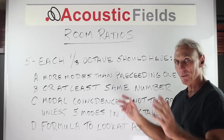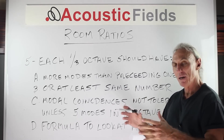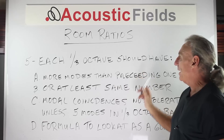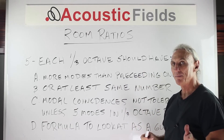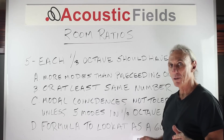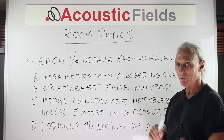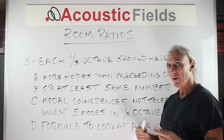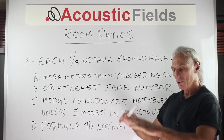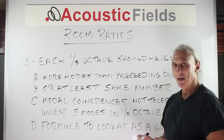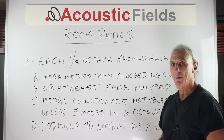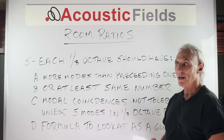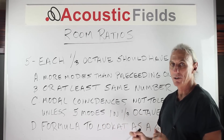What did Bonella try to do with all this information below 200 cycles that he discovered with 10 Hz mode spacing? He discovered that each one-third octave band should have more modes than the preceding one — or at least the same number — to minimize audible distortions within the room. These are the criteria he used to evaluate and come up with this general guideline. Is this the final definitive method? No, because it depends on room usage and pressure levels, but it's a great start.